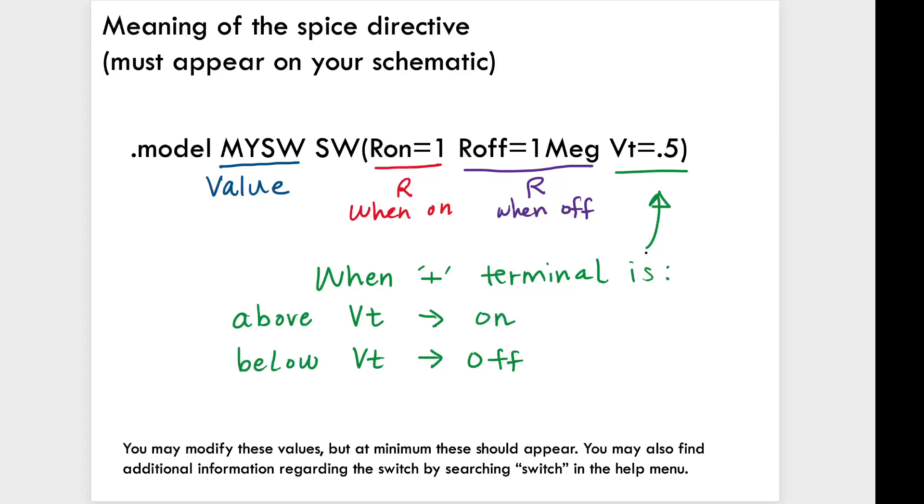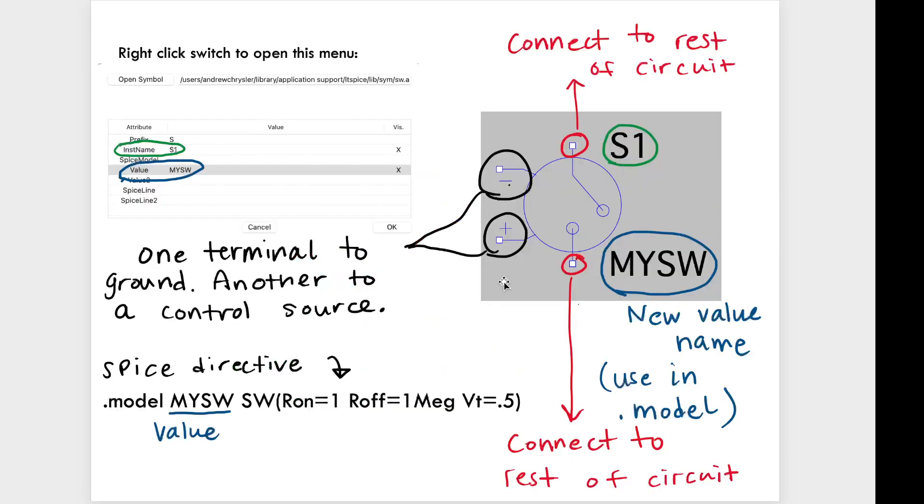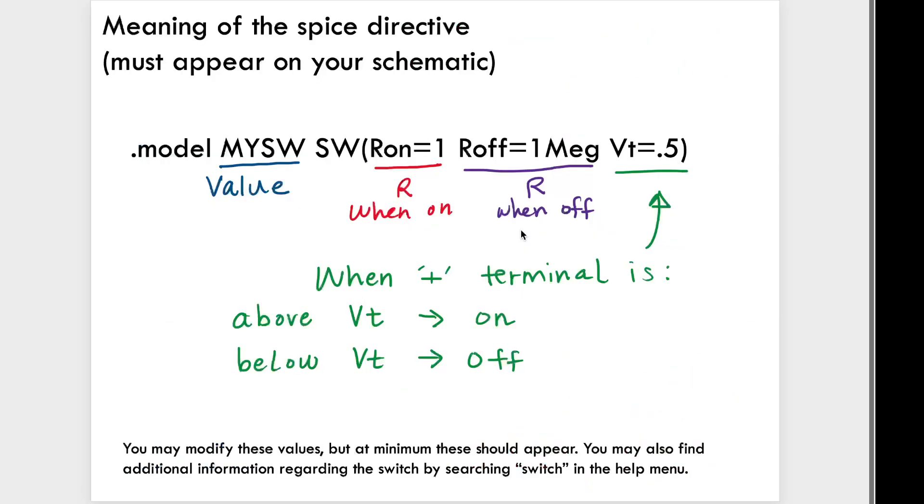Lastly, you need some kind of threshold. And well, the meaning of this could be when the plus terminal of your switch, so that's this terminal right here. When that plus terminal is above your threshold voltage, you're going, the switch will act like it's in the on. It's going to use the on resistance. When the plus terminal is below this threshold voltage, it's going to operate with this R off resistance.